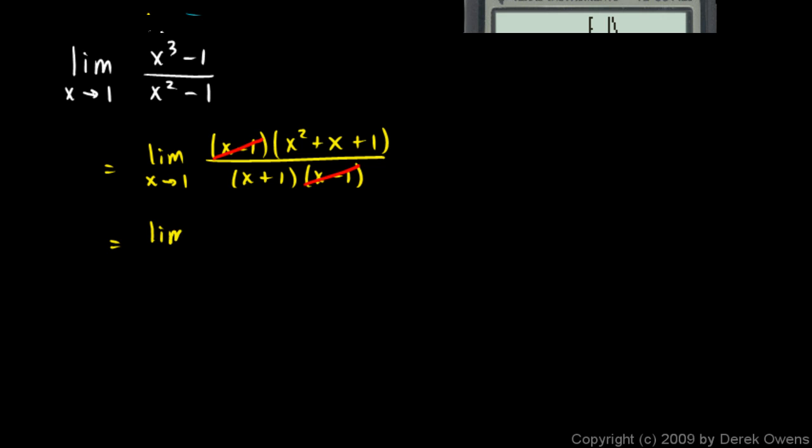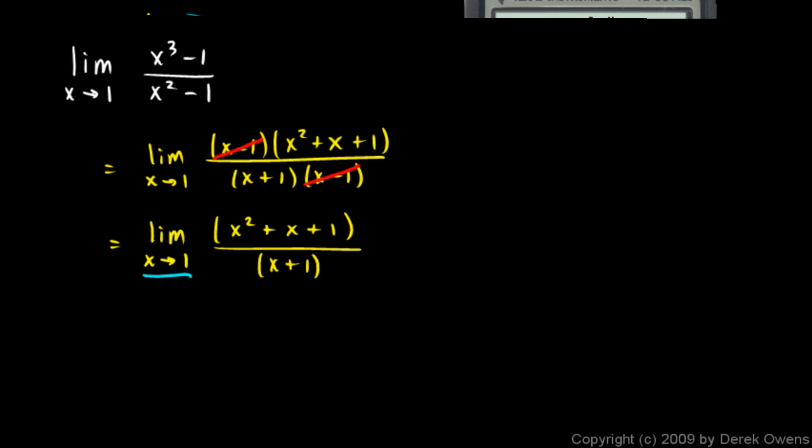So what we're left with is the limit as x approaches 1 of these factors that didn't cancel. x squared plus x plus 1 over x plus 1. Now can we plug in an x value of 1 into this expression? Well, we sure can. Let's just do it. This is going to be 1 plus 1 plus 1 over, and then here as x approaches 1, that's 1 plus 1. So that's 3 halves.